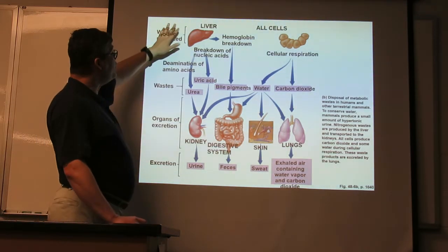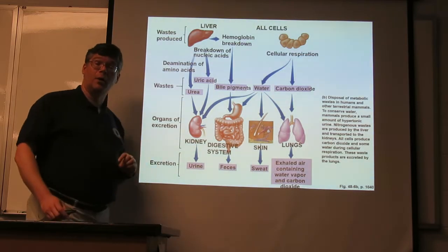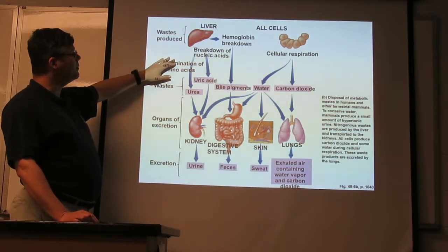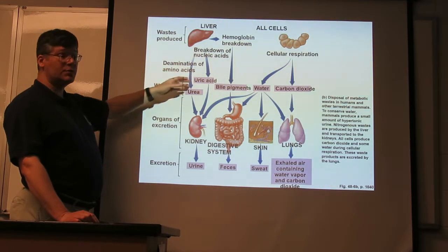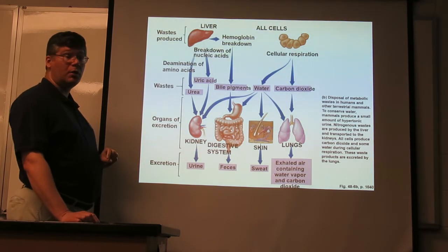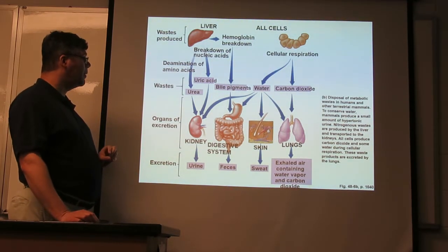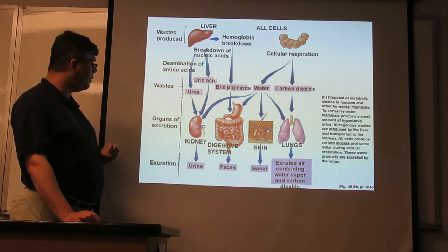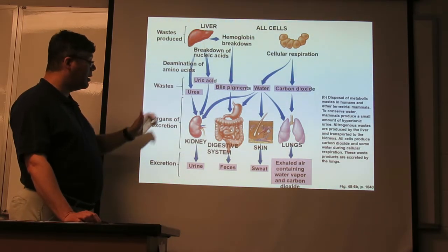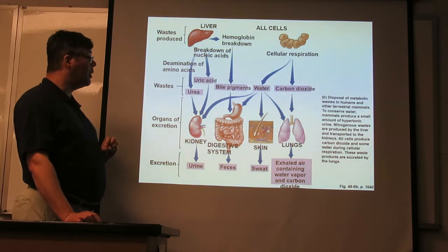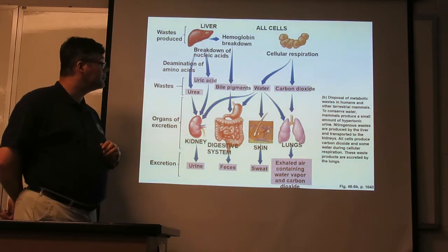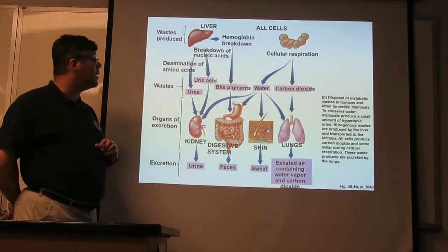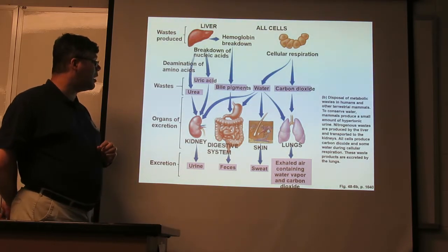The liver also can break up old nucleic acids and excess amino acids and produce uric acid and urea. These will be filtered out by the kidneys and go out with the urine. This is the pattern for mammals — you do have some differences in other types of animals.